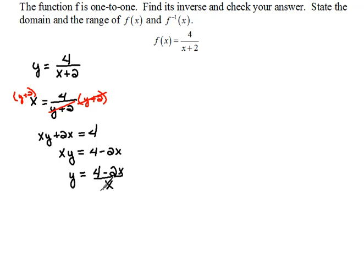This is the inverse function. Now we don't want to write it as y because that's the same as this. It makes it seem like those are the same function, but they're really not. We need to make some distinction here. So we need to rewrite it as the inverse function is 4 minus 2x over x. There is our inverse function.